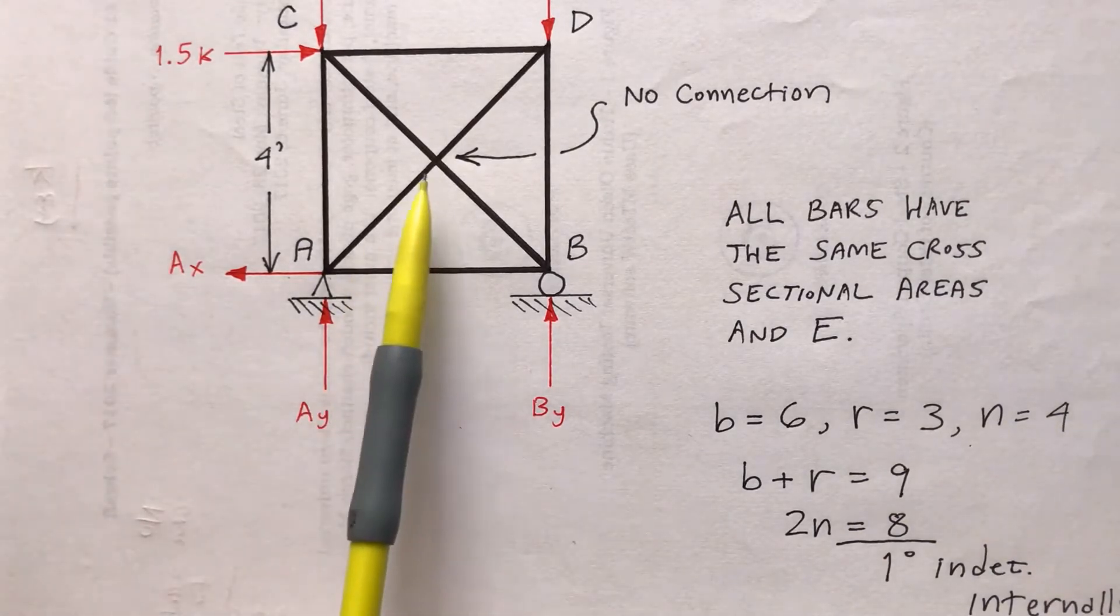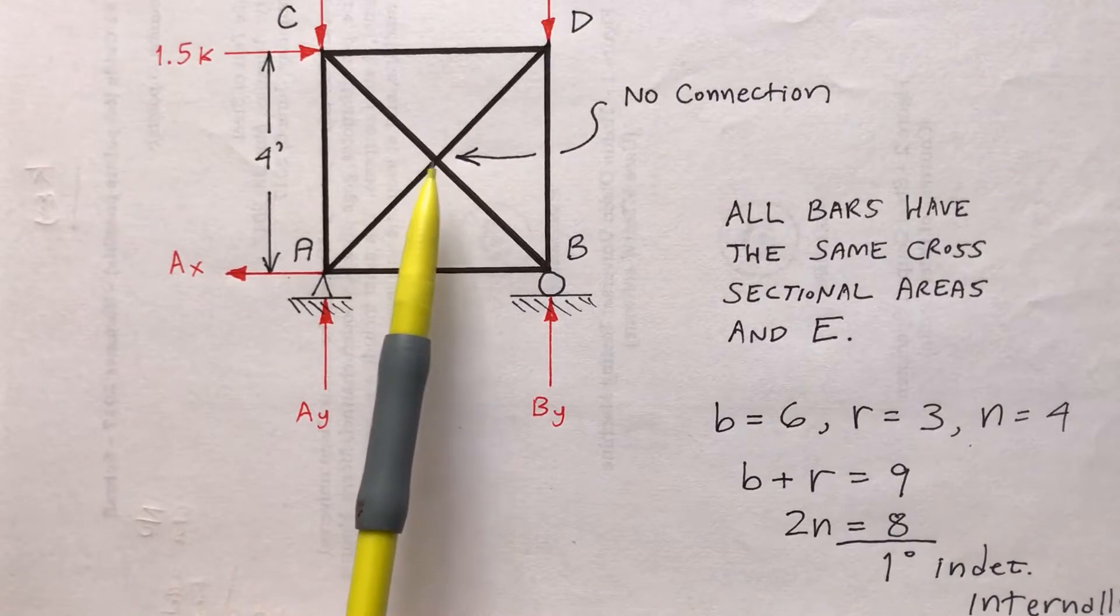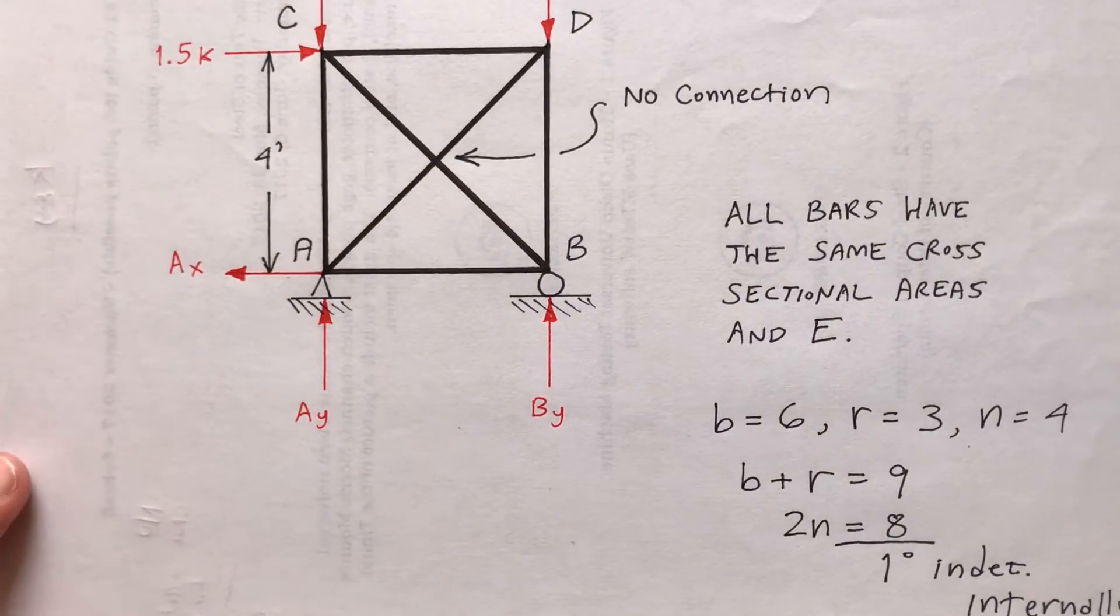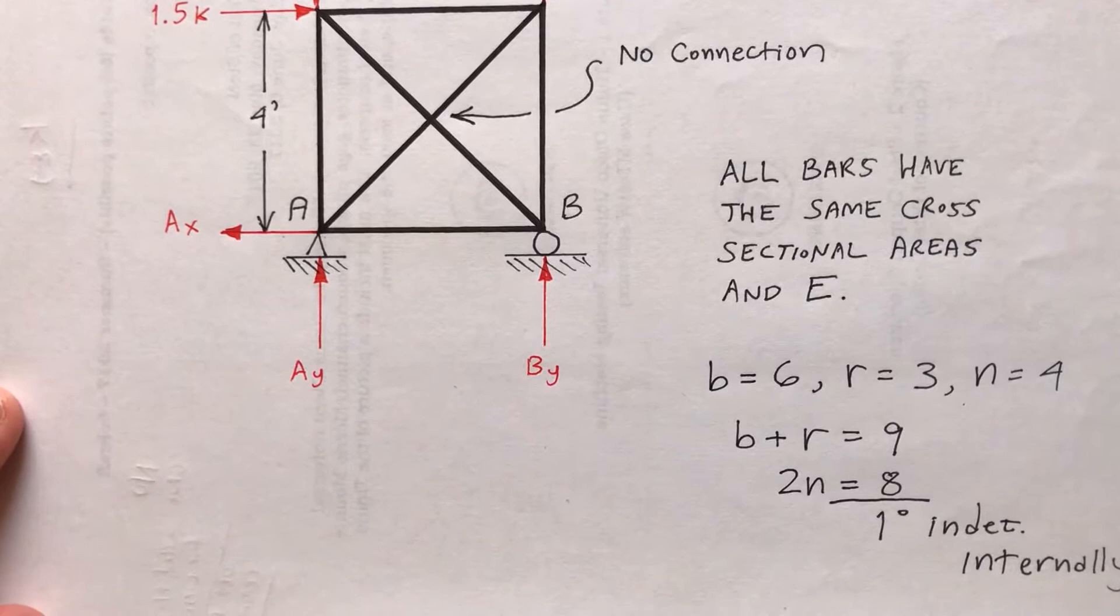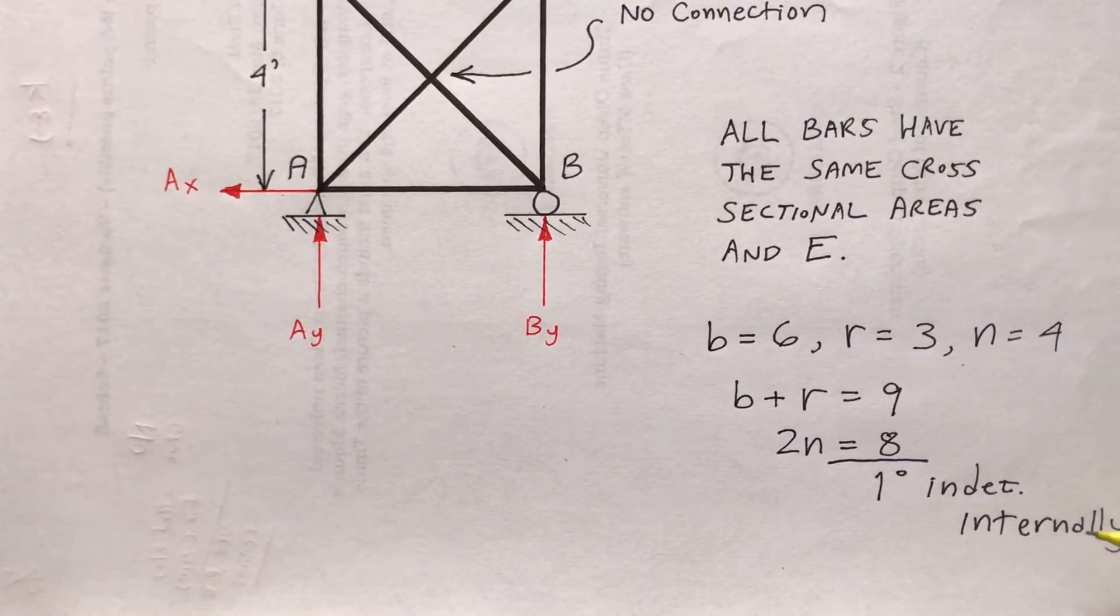Six bars, three external reactions, and four nodes. It doesn't count as a node here because the bars don't connect at that intersection. B plus R is 9, 2N is 8. One degree of indeterminacy internally. However, externally, we do have three reactions. So it's determinate externally, but it happens to be indeterminate internally.